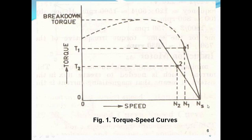The motor never runs at synchronous speed — speed is always less than Ns. At synchronous speed the torque is 0; the motor will not produce any torque if speed equals synchronous speed. That is why the induction motor never runs at synchronous speed. Note down the characteristics and draw the figure.